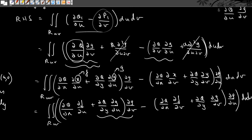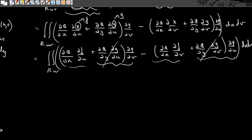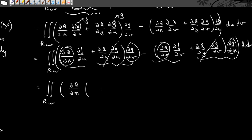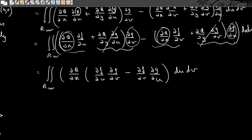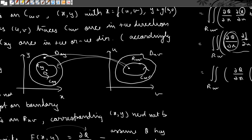Expanding ∂Q/∂u and ∂Q/∂v using the chain rule — since Q is a function of x and y — and substituting x = f(u,v) and y = g(u,v), we get the integral over R_uv of (∂Q/∂x · ∂f/∂u + ∂Q/∂y · ∂g/∂u) · ∂g/∂v minus (∂Q/∂x · ∂f/∂v + ∂Q/∂y · ∂g/∂v) · ∂g/∂u. The ∂Q/∂y terms cancel, and we are left with ∂Q/∂x times (∂f/∂u · ∂g/∂v − ∂f/∂v · ∂g/∂u) du dv, which is exactly the Jacobian determinant.